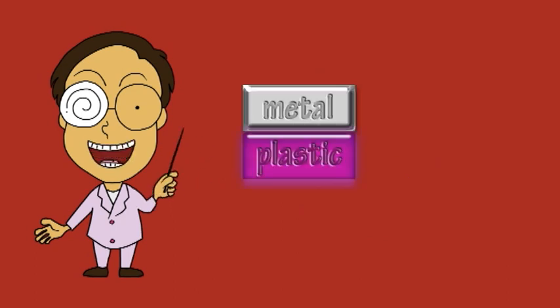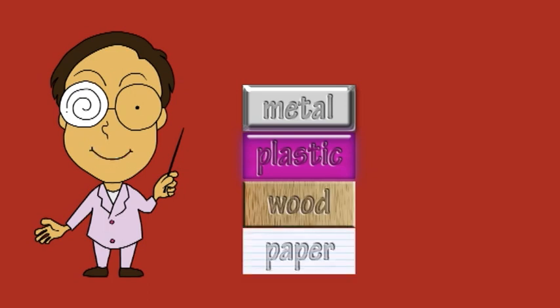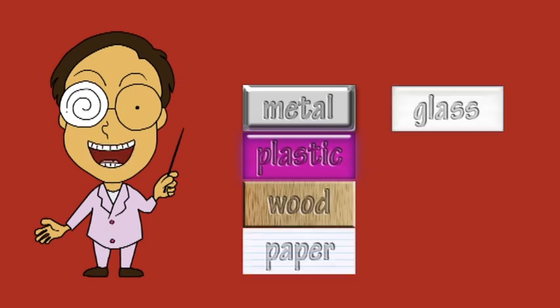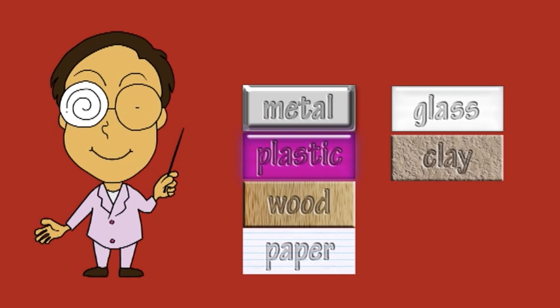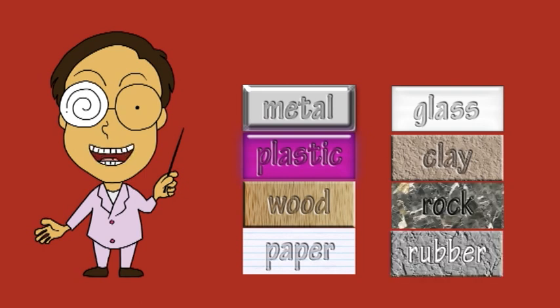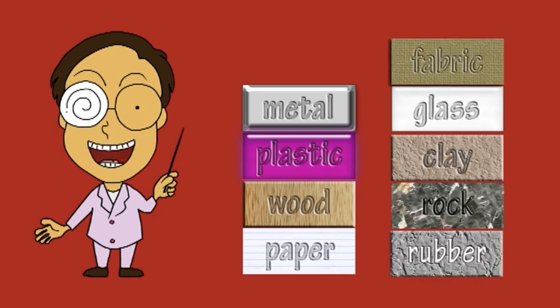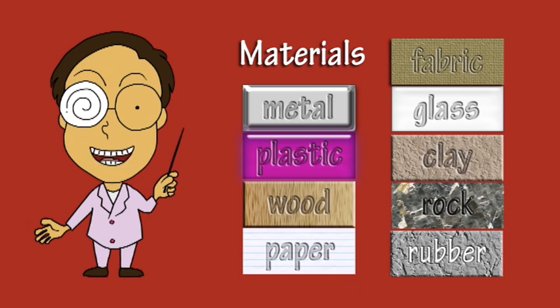Metal, plastic, wood, paper, glass, clay, rock, rubber, and fabric are some of the common materials everyday objects around us are made of.